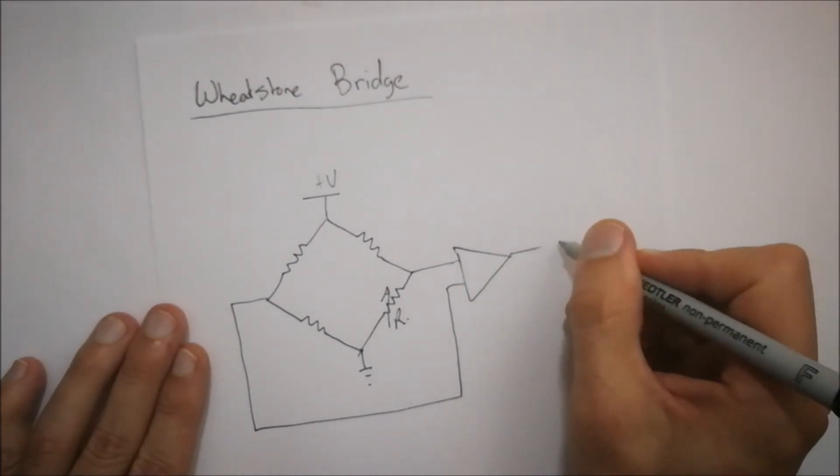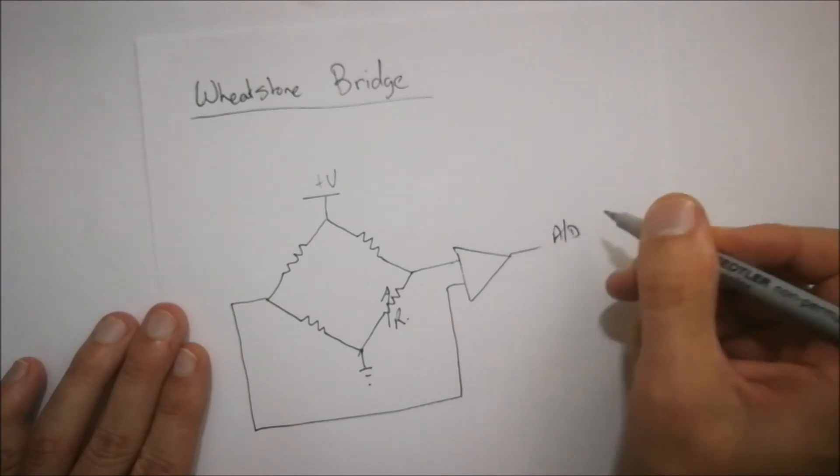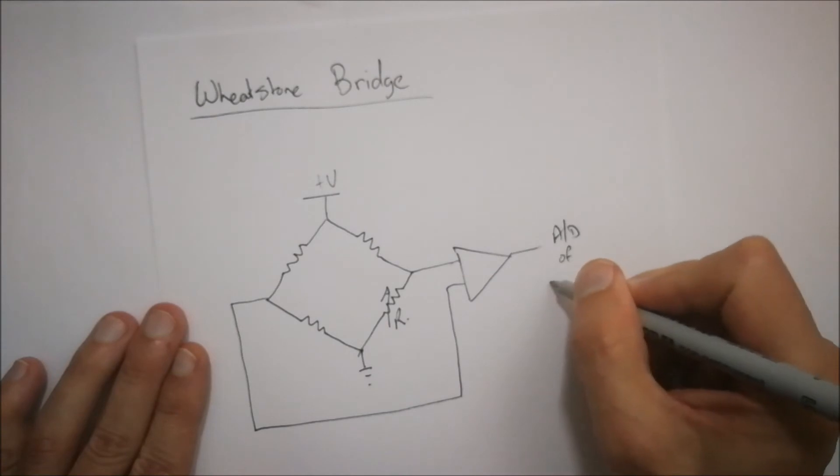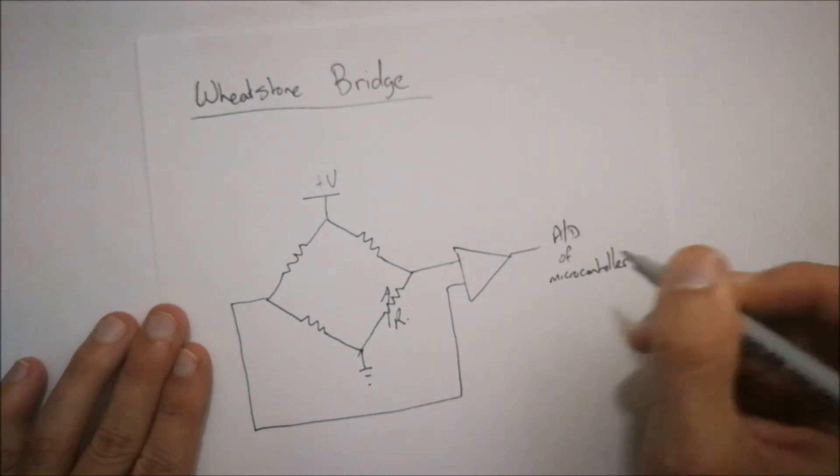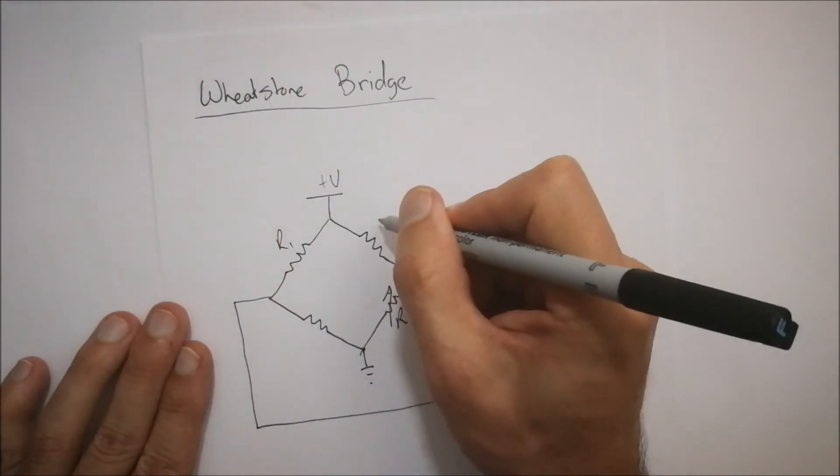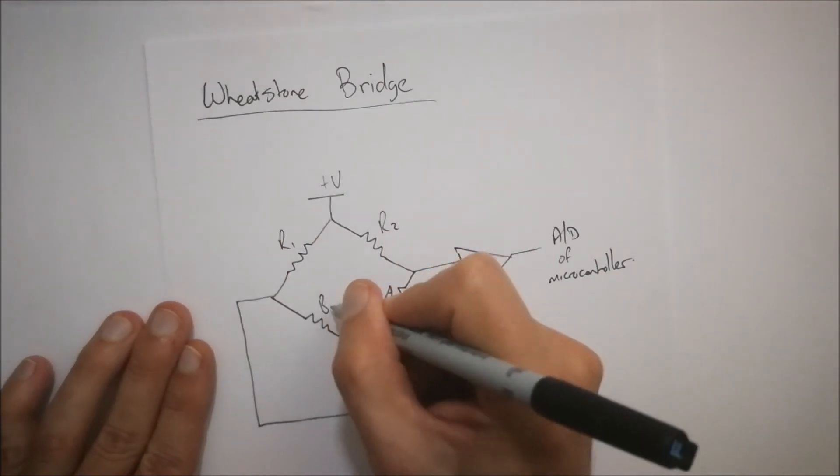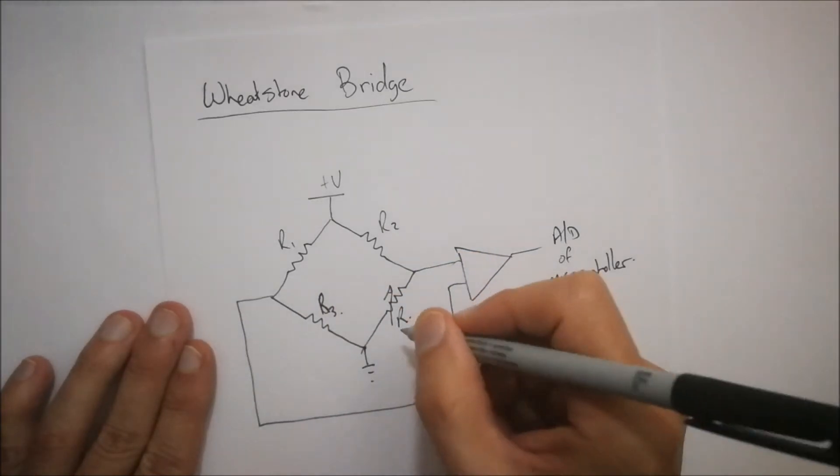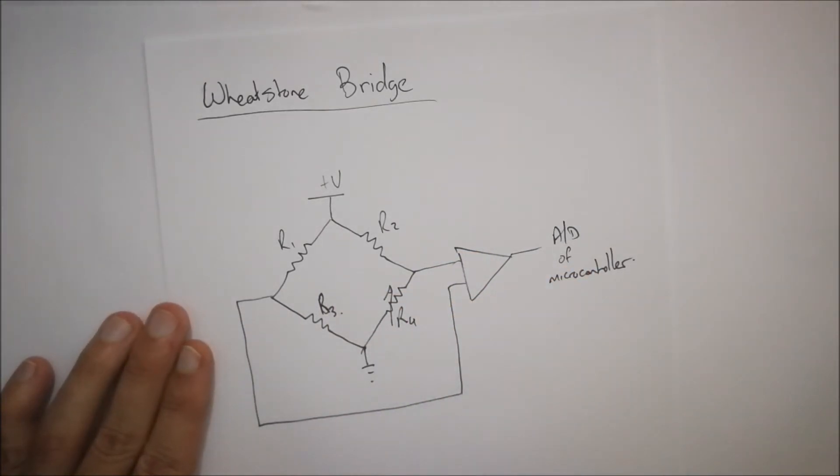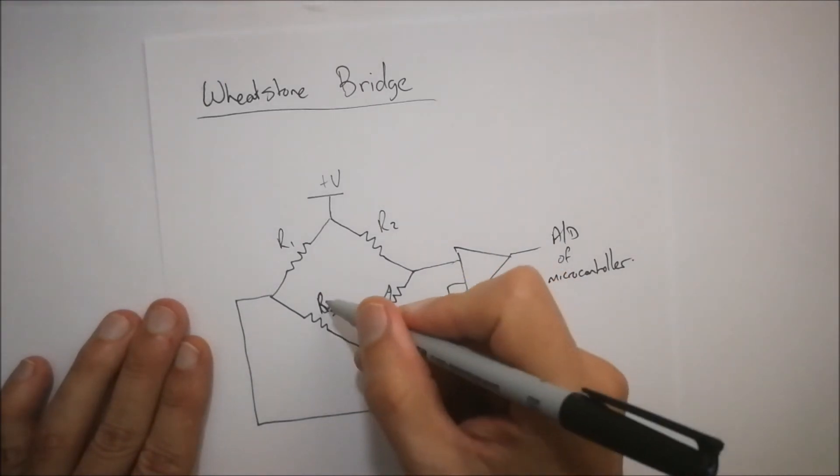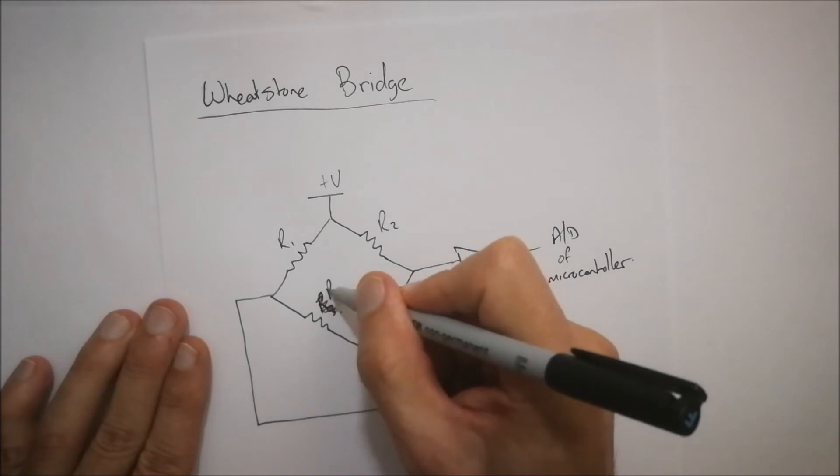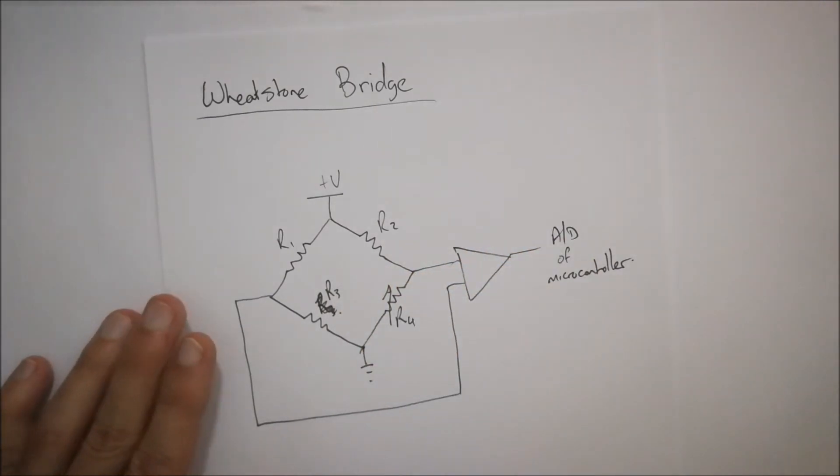And then these two outputs over here will then go into an op-amp comparator. And that will give us an output to an A2D converter or analog to digital converter of a microcontroller. So this could be R1, R2, and R3. And this could be R4 just for sake of labeling different things. So the thing is though is this is an R3, just do not confuse it as a beam.